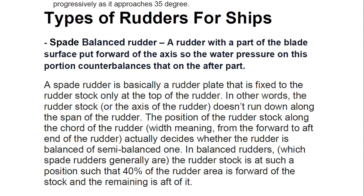The first type is the spade or balanced rudder — a rudder with part of the blade surface forward of the axis, so that water pressure on that forward portion counterbalances the pressure on the after part. It is fixed to the rudder stock only at the top, meaning the rudder stock does not run along the full span of the rudder. The position of the rudder stock along the chord of the rudder determines whether the rudder is balanced or semi-balanced.